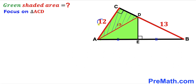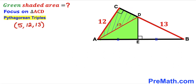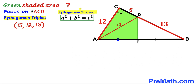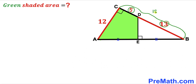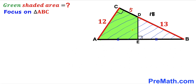Now let's focus on right triangle ACD, whose known side lengths are 12 and 13. Recalling the Pythagorean triplet 5-12-13, since AC is 12 and the hypotenuse AD is 13, the unknown side CD is 5 units. Therefore, the whole side BC equals CD plus BD, which is 5 plus 13, giving us 18 units.